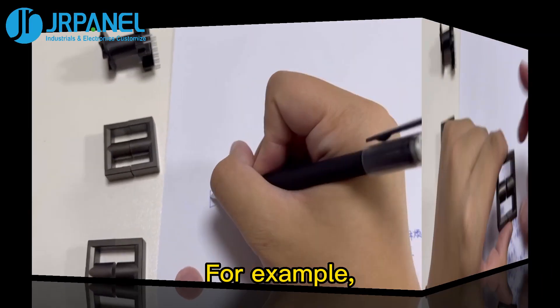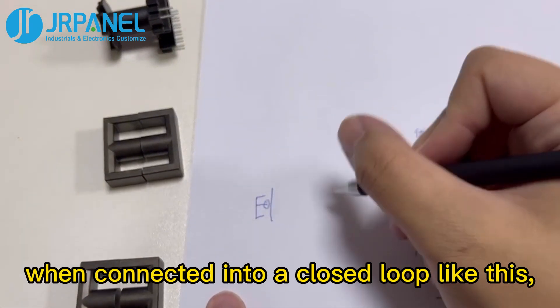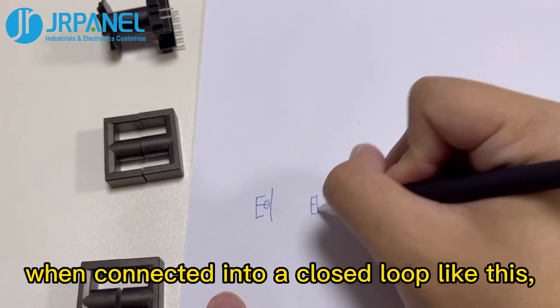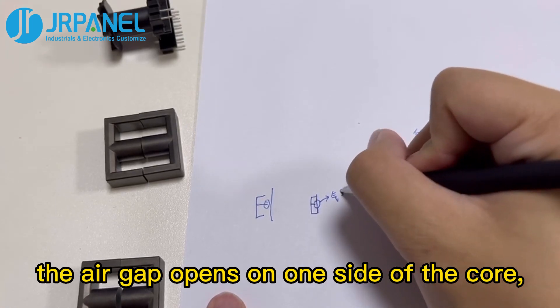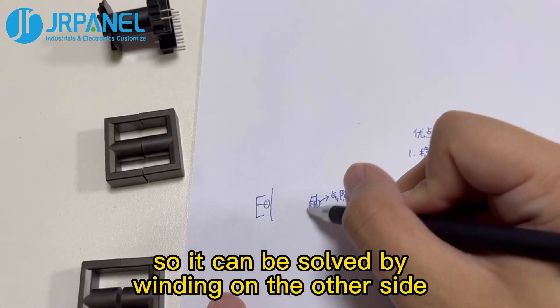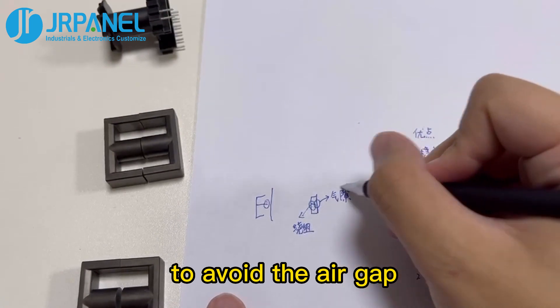Then how to solve this problem? For example, the H-Type. When connected into a closed loop like this, the air gap opens on one side of the core. So it can be solved by winding on the other side to avoid the air gap.